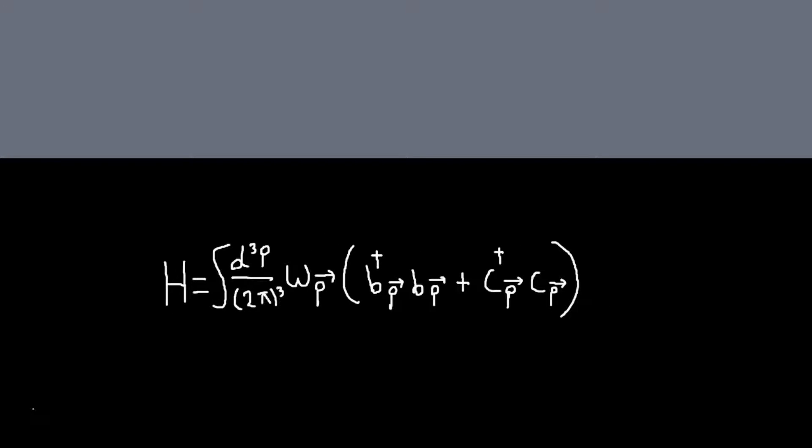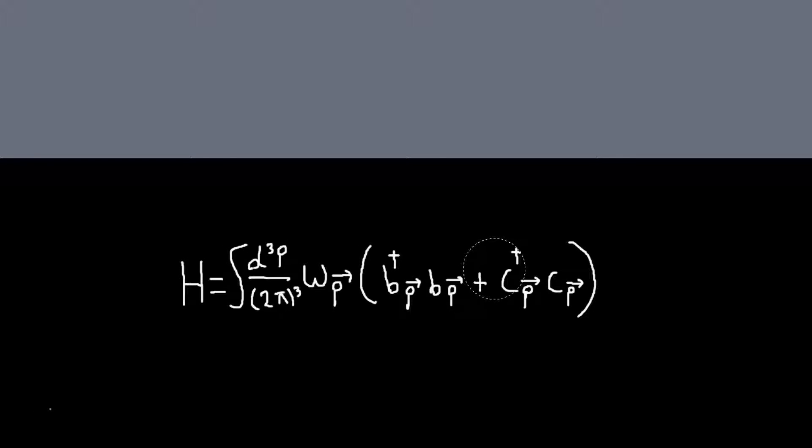And so, again, both of these particles will have mass M and then we'll have zero spin and they're bosons. But then the obvious question is, what is the relationship between these two particles?